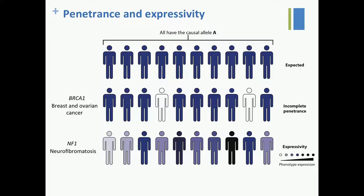Sometimes when you have a monogenic mutation, you can see incomplete penetrance — meaning individuals carry the monogenic mutation but don't express the expected phenotype. A well-known example is BRCA1 alleles, which are involved in breast and ovarian cancer. At the same time, sometimes the penetrance of a monogenic mutation is 100%, but you can see a variety of phenotypes among individuals — this is the case for type 1 neurofibromatosis.